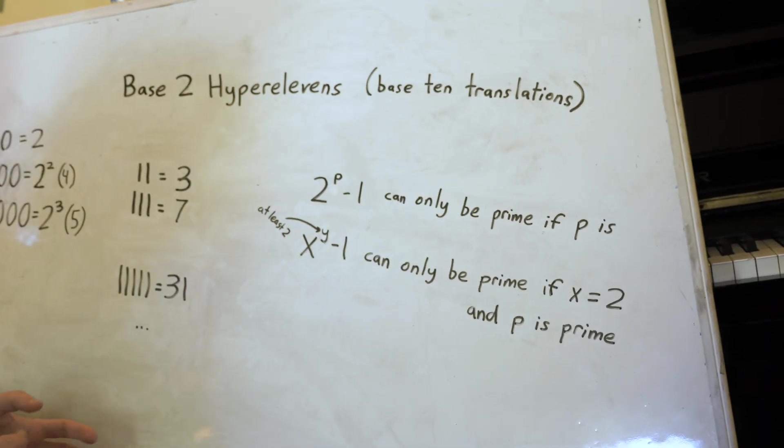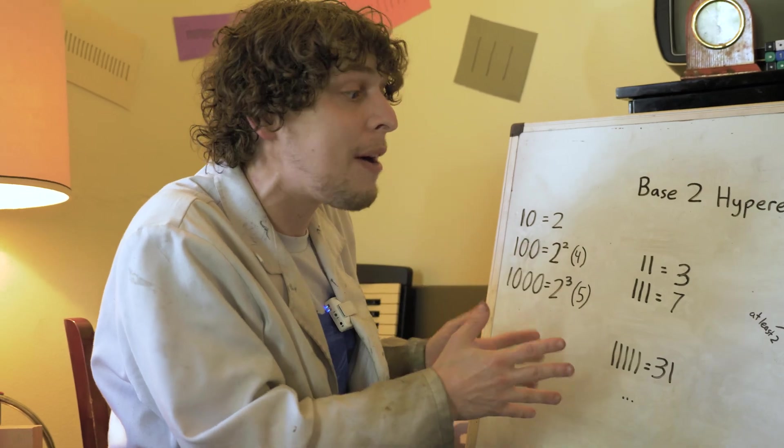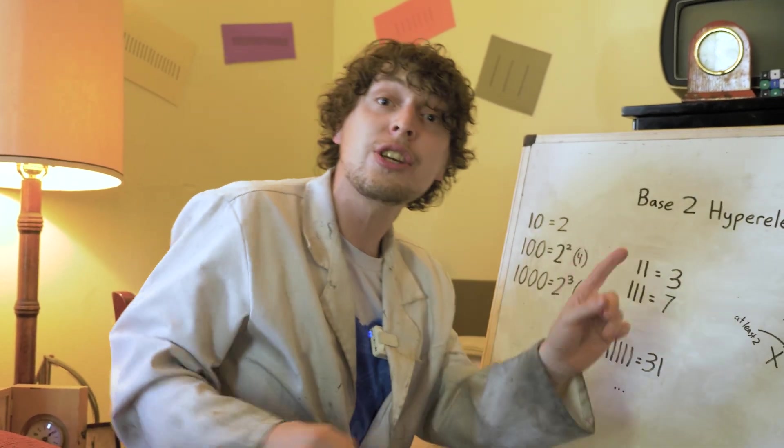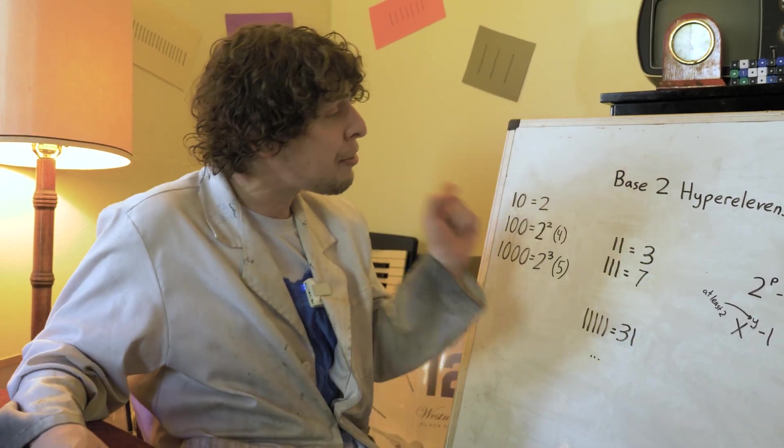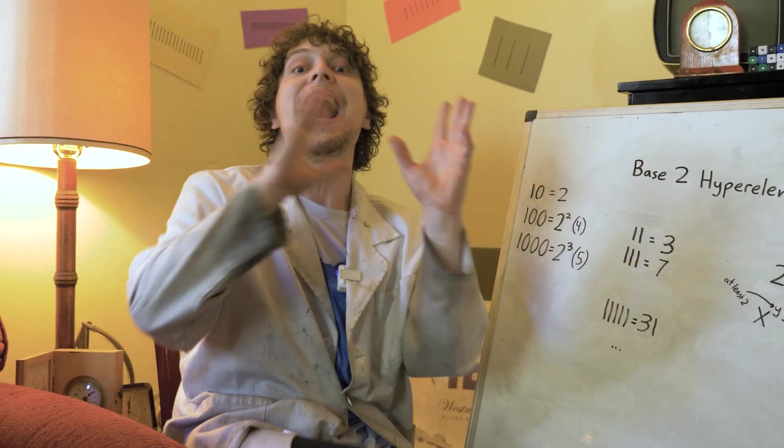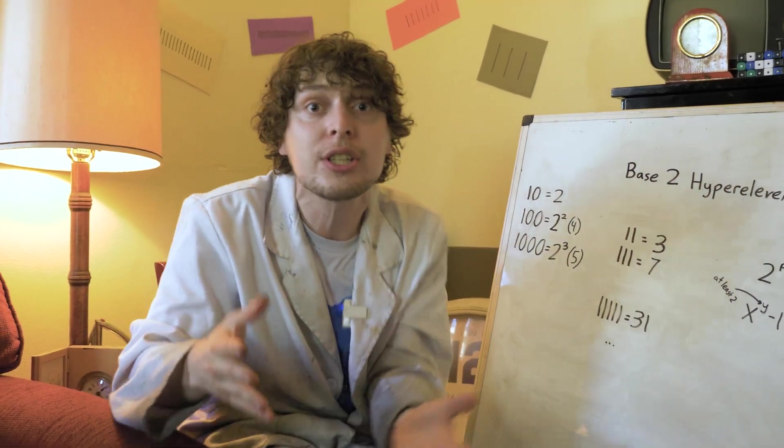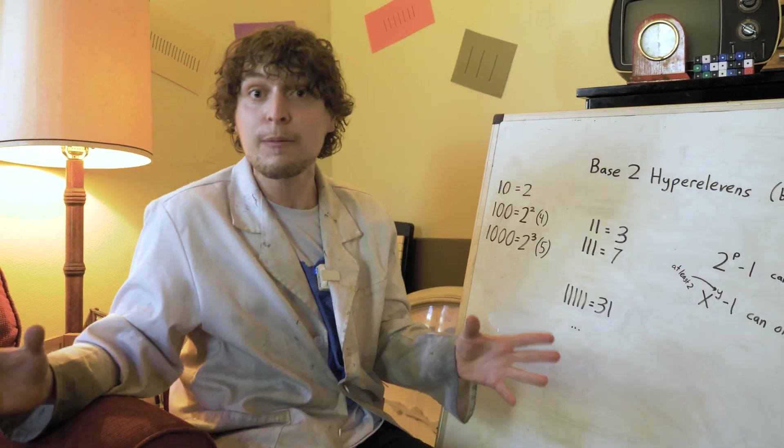So these mersenne numbers are a pretty fundamental type of prime, and they also have other ways in which they're easier to factorize, making them easier to check large numbers whether they are prime or not. And that's part of why the 8 biggest prime numbers discovered by humanity are of this form. They're mersenne primes.